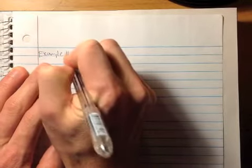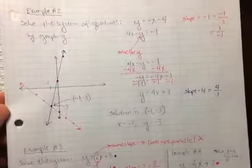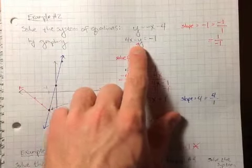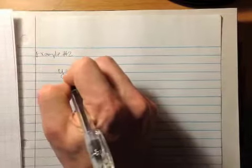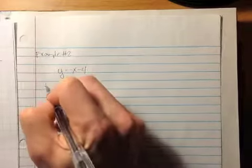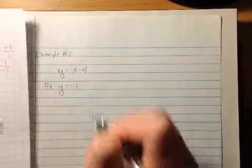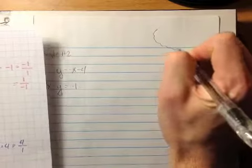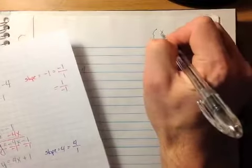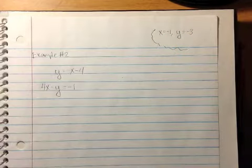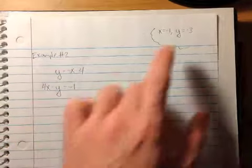Now let's take a look at a second example. This example might look familiar to you, because I want to look at example number 2 from the other video. So this system of equations: I want to solve it by substitution now. y equals negative x minus 4, and 4x minus y equals negative 1. Remember that the solution we found to this system of equations by graphing was negative 1 comma negative 3. So x equals negative 1, y equals negative 3. We're going to solve this by substitution and try to replicate that answer.